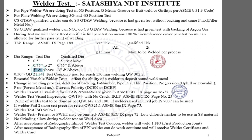For diameter range, if a welder is tested on above 3 inch pipe, he can weld any maximum diameter pipe. If the welder test is done on a 0.75 inch to 2 inch pipe, he can weld a minimum of 0.75 inch pipe as well as any maximum diameter. If a welder is qualified in half inch, he can qualify for minimum 0.5 inch and above any diameter.